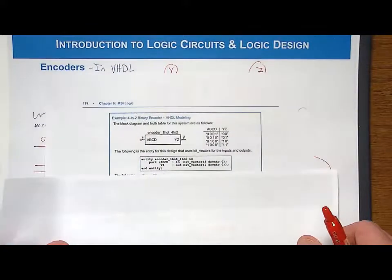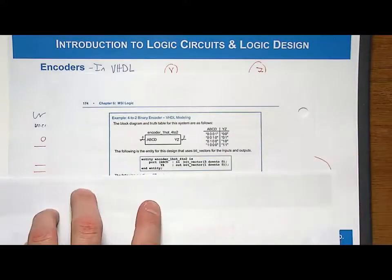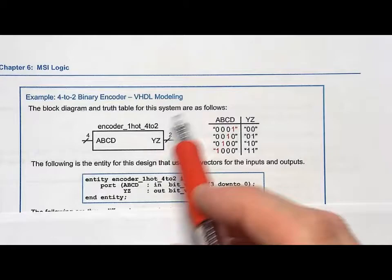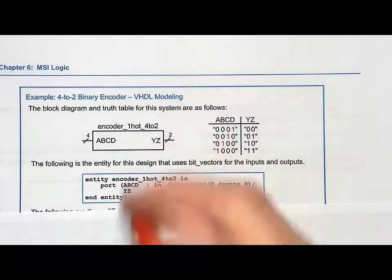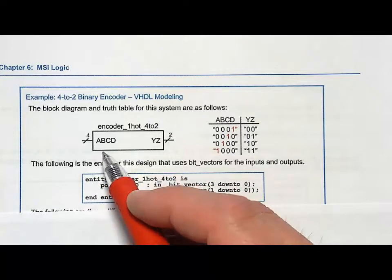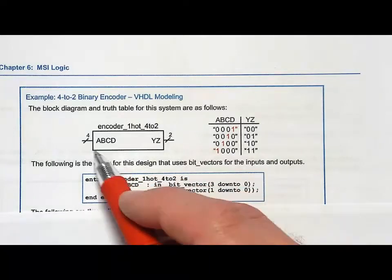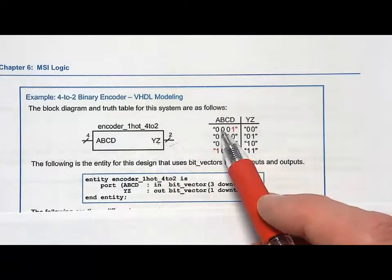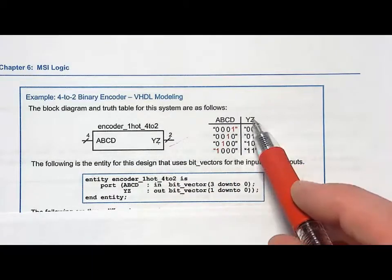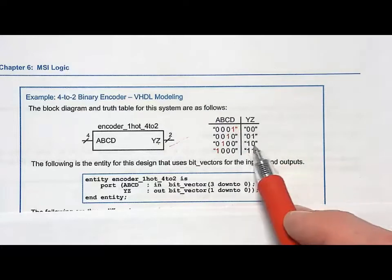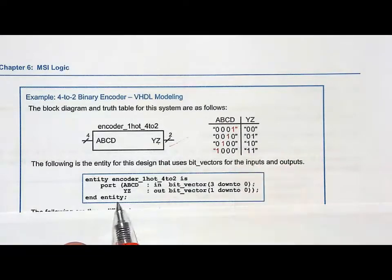So this was my original description of functionality, and notice that we're going to now model the inputs, the four inputs as a four-bit vector. You'll get used to seeing that—it's easier to do that, kind of trying to get more compact modeling approaches. And then the output we're going to call it Y and Z. We still have the same truth table where the output zero zero occurs when D is asserted, zero one occurs when C is asserted, et cetera.